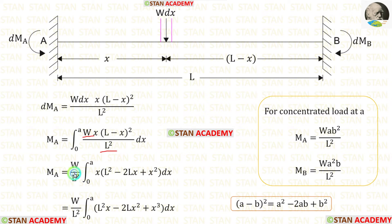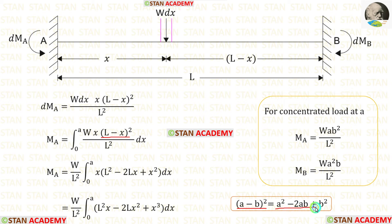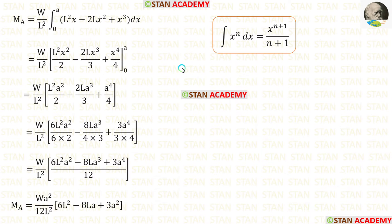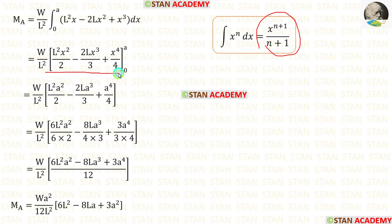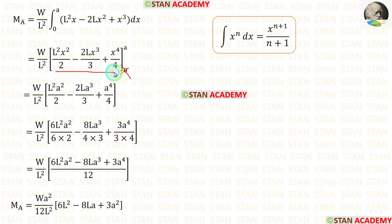Let us take W and L² outside as they are constants. For (L minus x)² we apply the (A minus B)² formula: A² minus 2AB plus B². Then we multiply x with this expanded term. After multiplying, we perform the integration using the formula x^(n+1)/(n+1). Then we apply the limits — no need to apply the lower limit 0, as the whole term becomes 0. We apply only the upper limit A, substituting x with A.